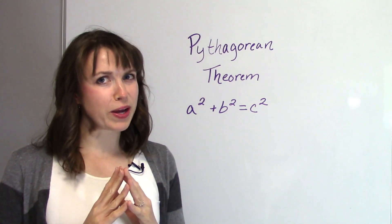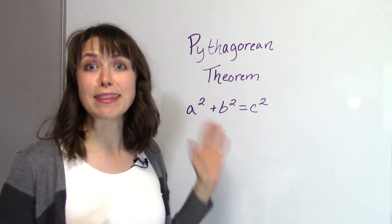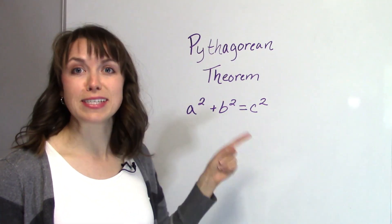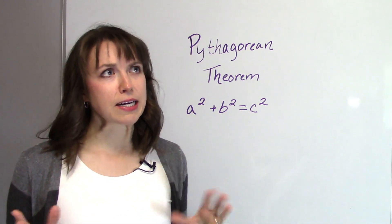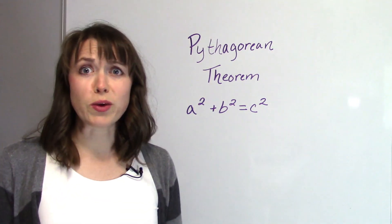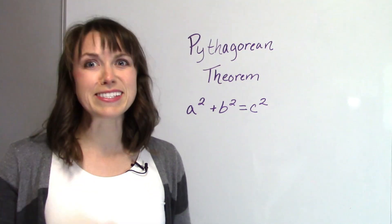So I've had a couple of requests for the Pythagorean Theorem, which is just A squared plus B squared equals C squared. And it's basically a triangle. So here you go. I hope that this information helps you with whatever test you are studying for.